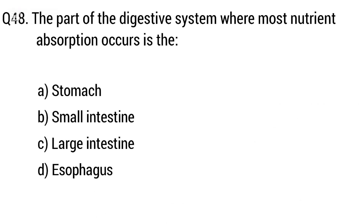Question 48. The part of the digestive system where most nutrient absorption occurs is? The right answer is option B: Small intestine.